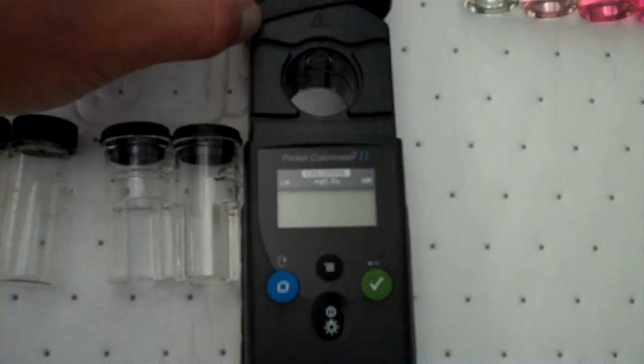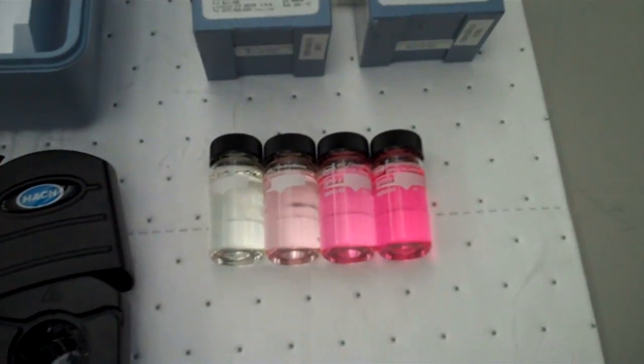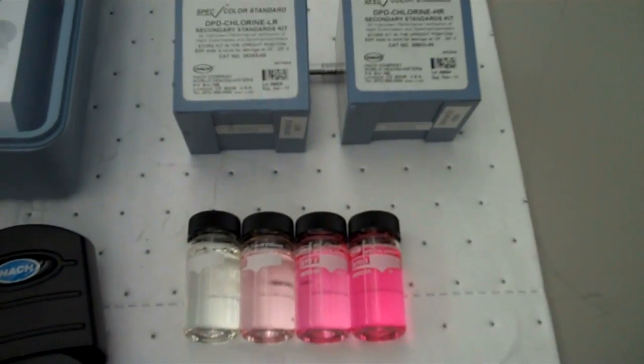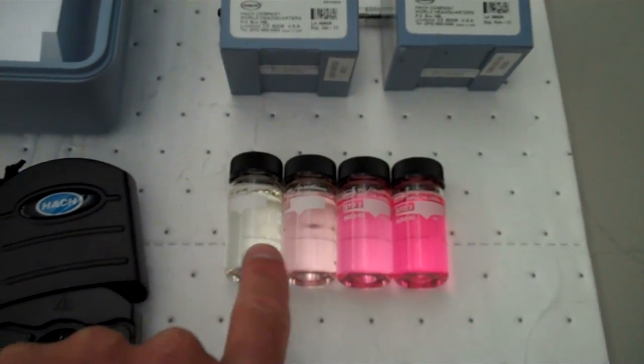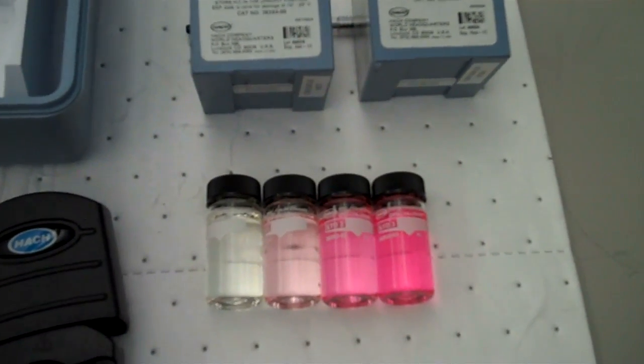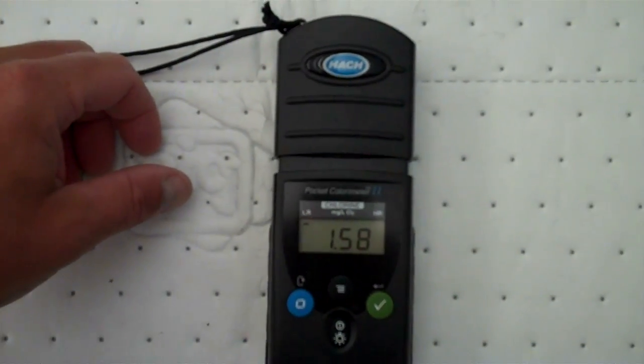The unit itself, we'll go over the parts and pieces in one second. We also have standards that are used as a bump check. You can see here that this one would be a blank, and as it starts to get darker in the pink color, the more chlorine would be.